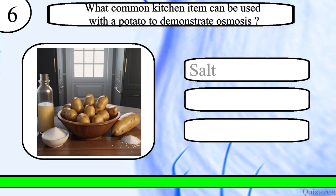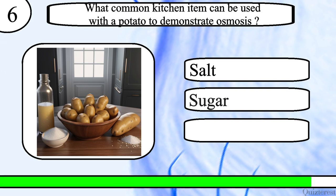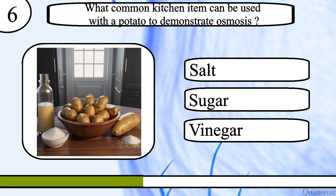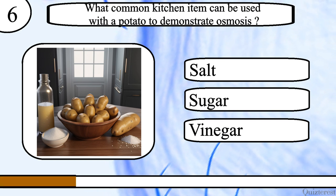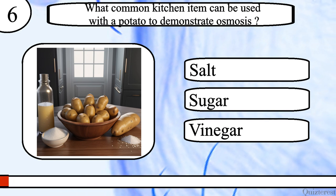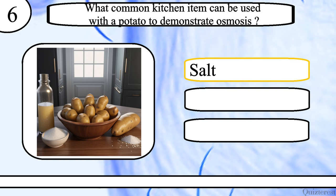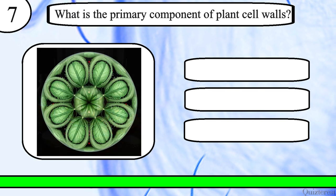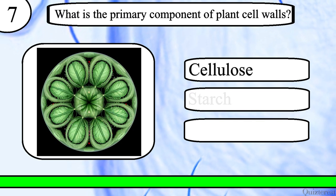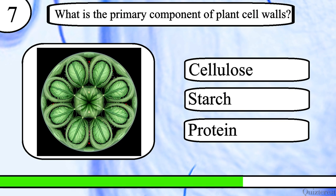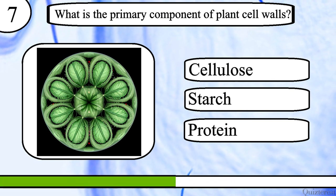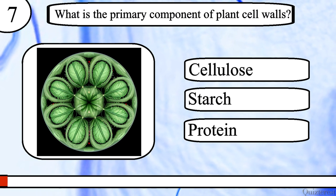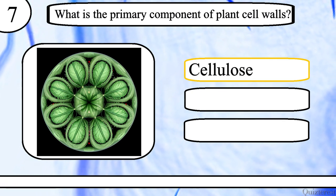Question 6. What common kitchen item can be used with a potato to demonstrate osmosis? Salt, sugar or vinegar? The correct answer is salt. Question 7. What is the primary component of plant cell walls? Cellulose, starch or protein? The correct answer is cellulose.